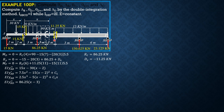EI y-double-prime BD equals 86.25(x minus 3) plus 90(x minus 5) to the zero power, plus the moment of the distributed loading which is 10(x minus 3) squared, then minus 15x minus 10x squared. The 90 kilonewton load acts with moment arm (x minus 5), so it is included with the Macaulay bracket. When the quantity inside the bracket is negative, it is not included in the calculations.